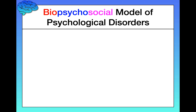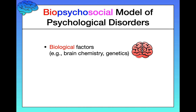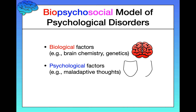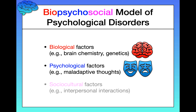Let me break that down. Bio refers to biological factors such as brain chemistry — having an imbalance of neurotransmitters like serotonin — and also genetics and genetic vulnerabilities. Psycho refers to psychological factors such as cognitive factors and maladaptive thought patterns. And finally, social refers to sociocultural factors such as interpersonal interactions, your lifestyle, and the community to which you belong, and how all of those impact the development of psychological disorders.